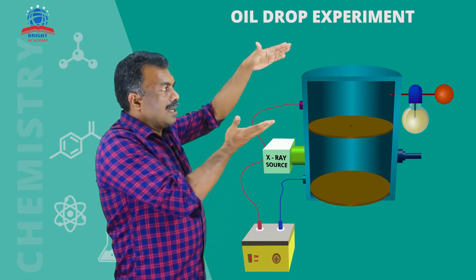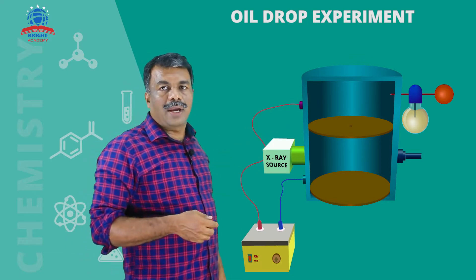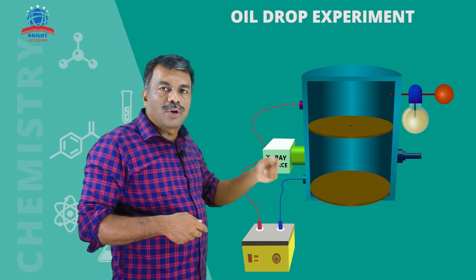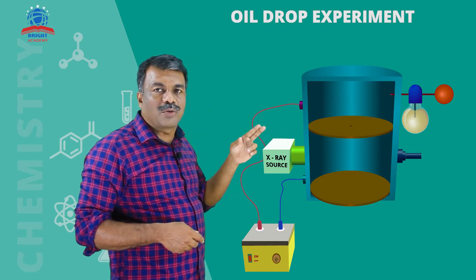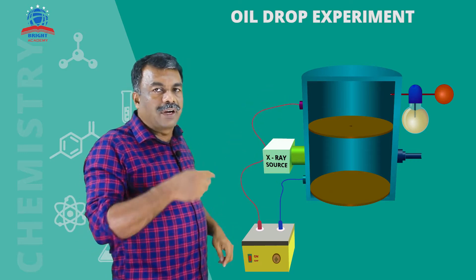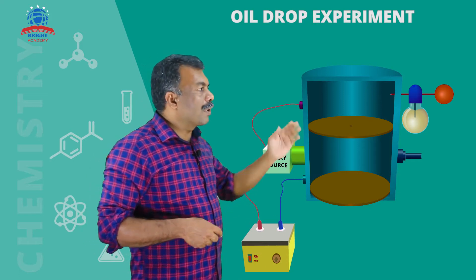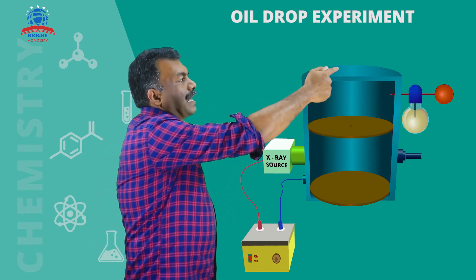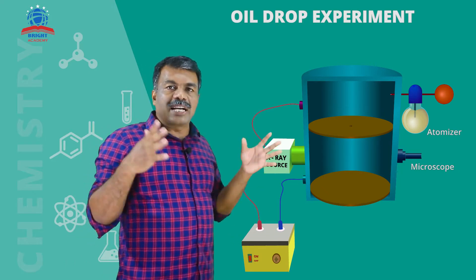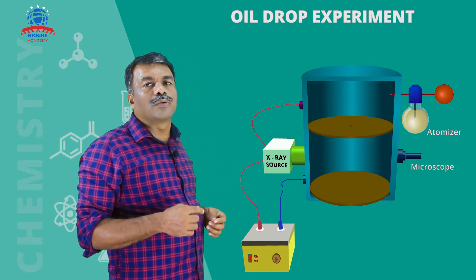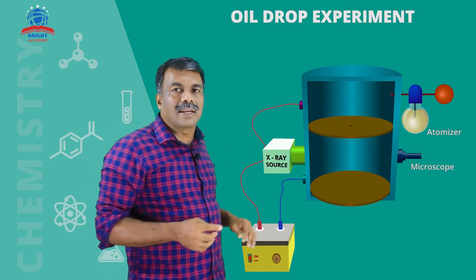You can see that a container has two plates. There is an X-ray source and a source of electricity. There is a special arrangement in that chamber known as an atomizer. Here is also a microscope. This is the experimental arrangement.